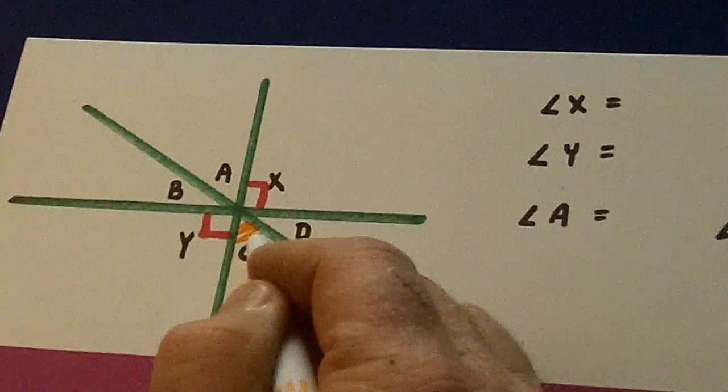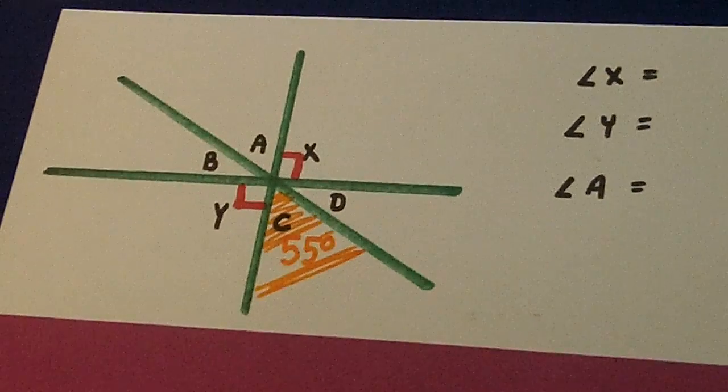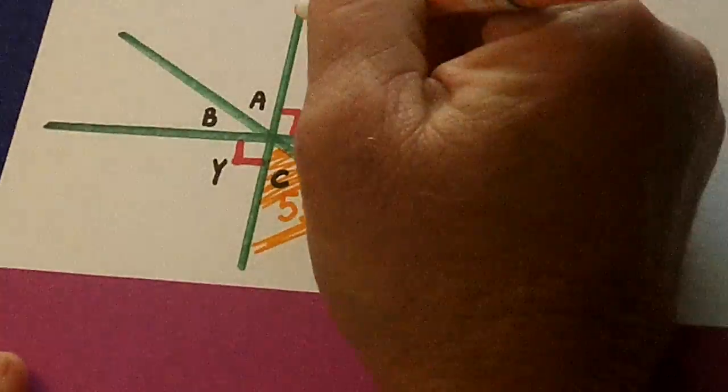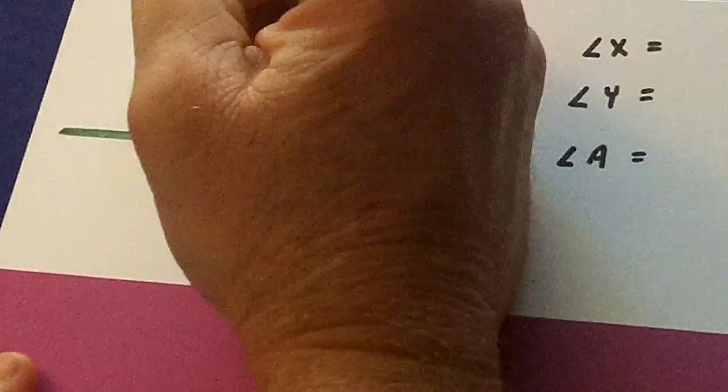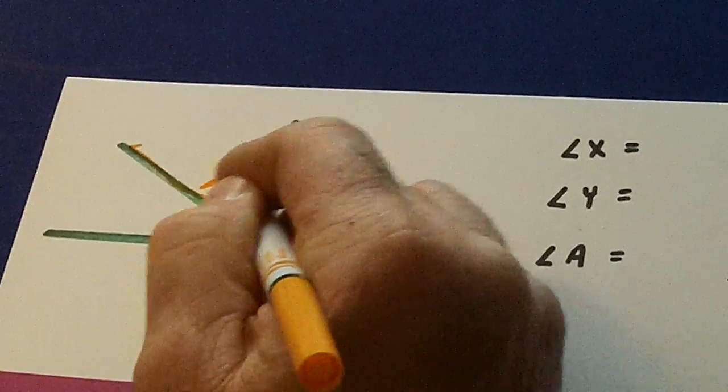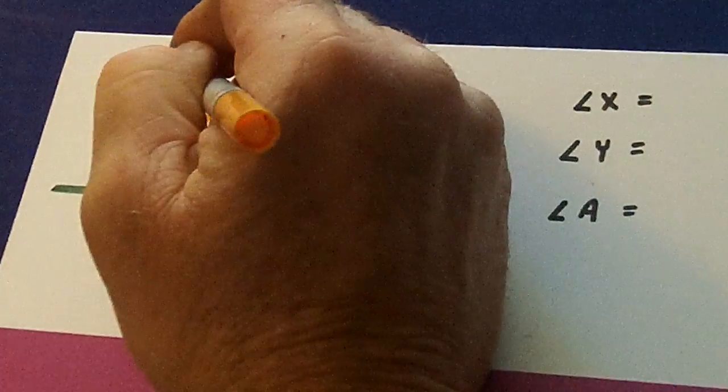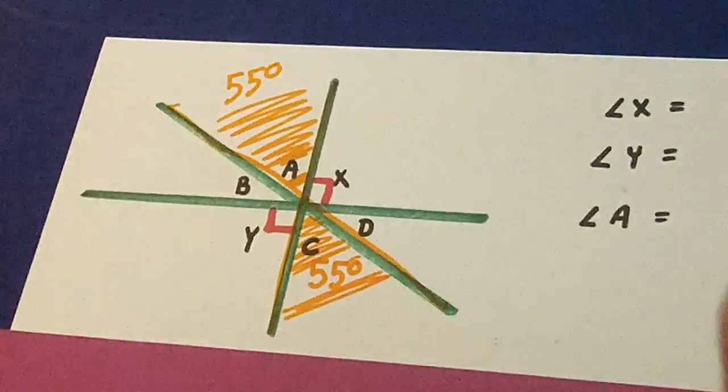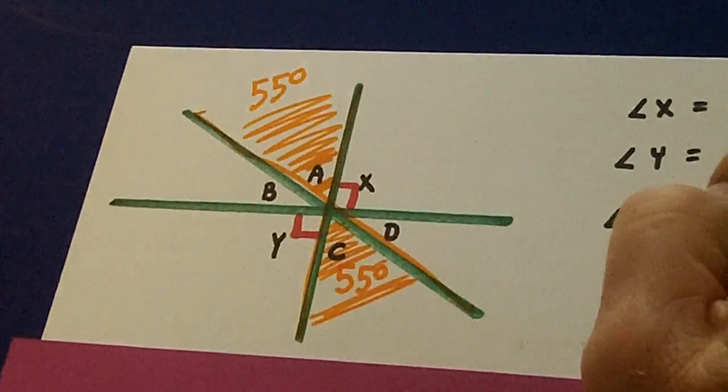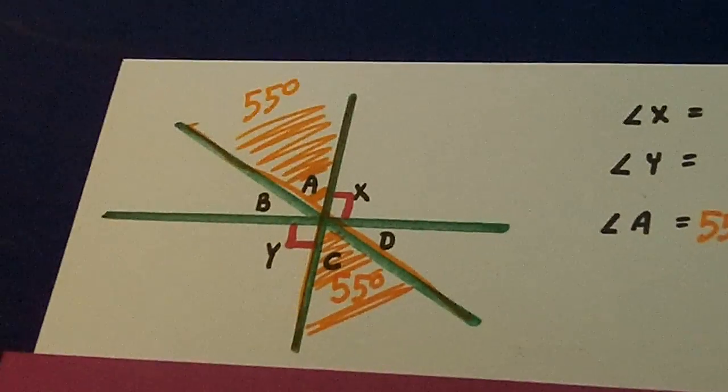Now watch this. Angle C is right here. This line and this line means that angle A is a vertical angle to C. So A is 55 degrees. A is 55 degrees because it's vertical to C.